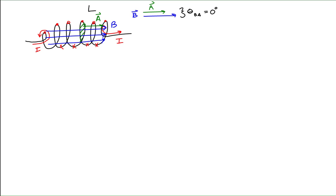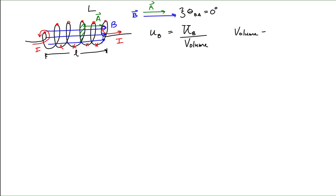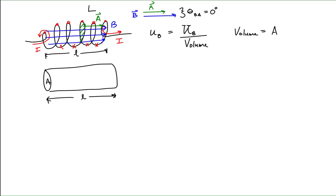Our goal is to find the magnetic potential energy density per unit volume, which is defined as the magnetic potential energy divided by the volume in space that the magnetic field occupies within the solenoid. The whole solenoid is of length L and cuts out a cylindrical volume in space, so the volume of the solenoid is going to be equal to the area of one of its coils times the length of the solenoid — that is, the volume is A times L.